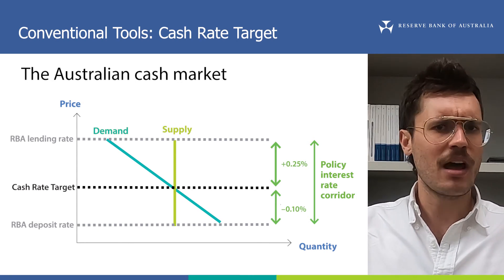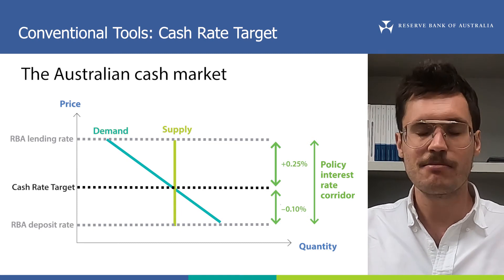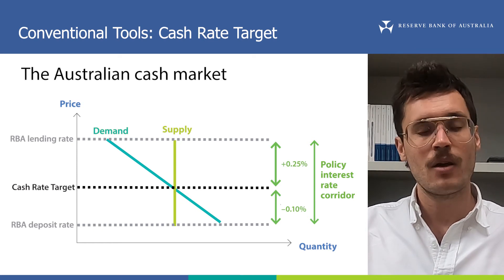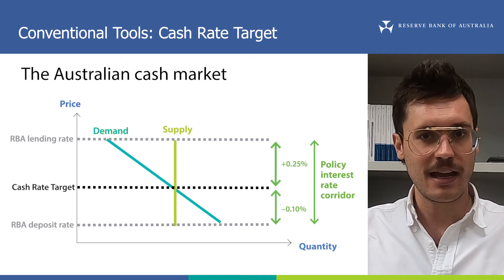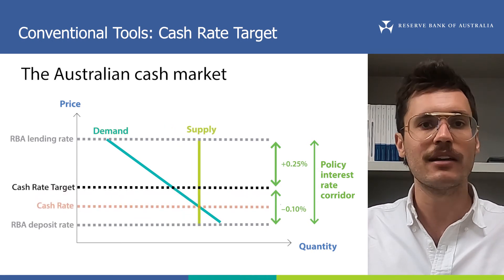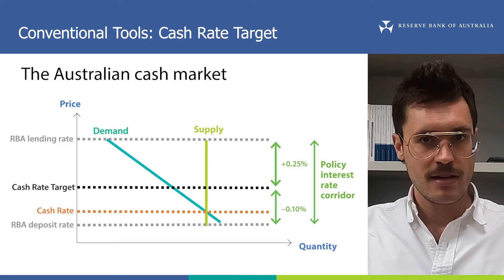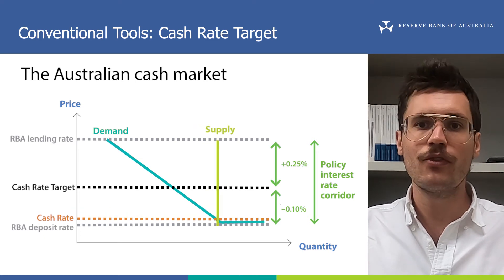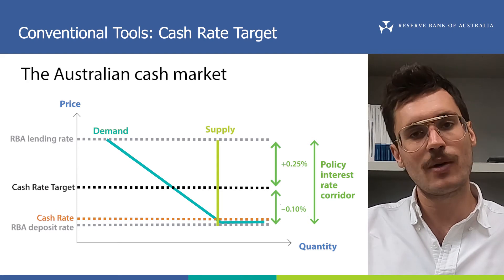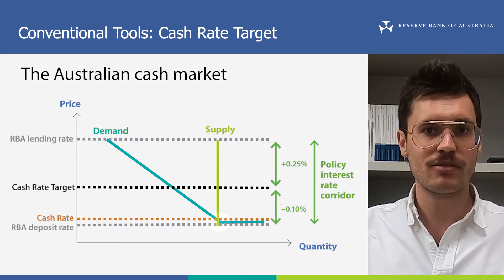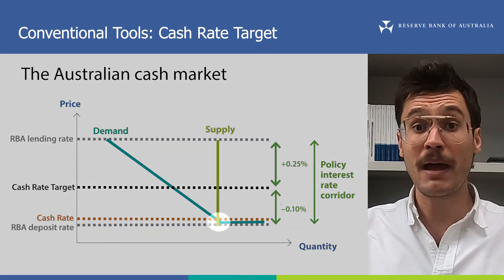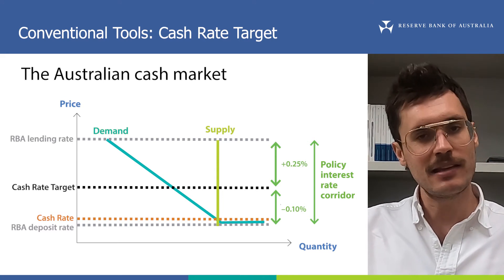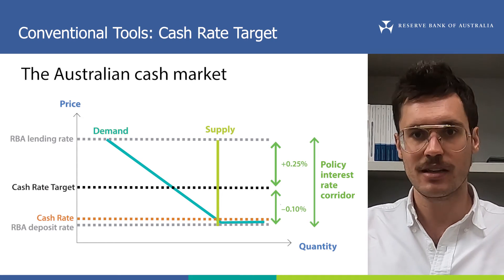But what would happen if the RBA allowed the supply of ES balances to increase? This might happen because of the use of other monetary policy tools, which we'll look at over the coming videos. Well, the supply line would move to the right and the intersection with the demand line would now imply a lower cash rate than before, below the target. If the RBA allowed the supply of ES balances to keep increasing, the cash rate would fall further below its target. But when the intersection between demand and supply reaches the RBA deposit rate, the cash rate cannot fall any lower because banks would deposit their extra ES balances at the RBA instead of trying to lend them to another bank in the cash market. This example shows us how the cash rate should never fall outside the policy corridor.